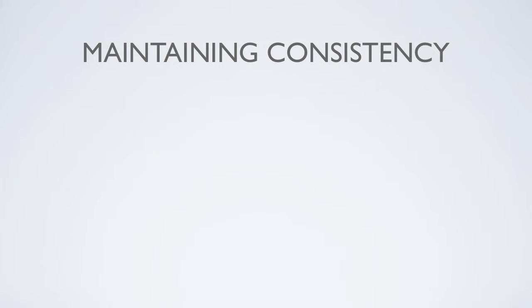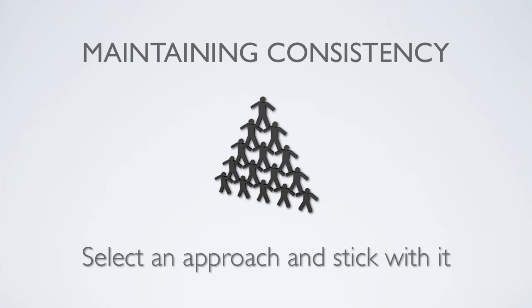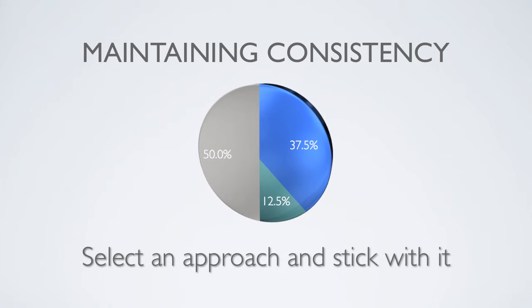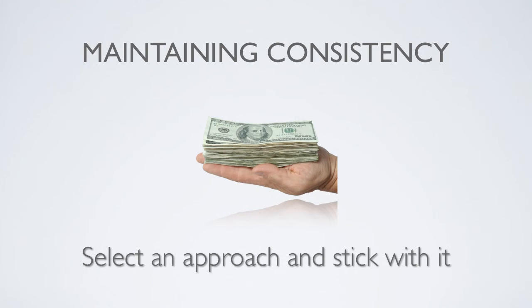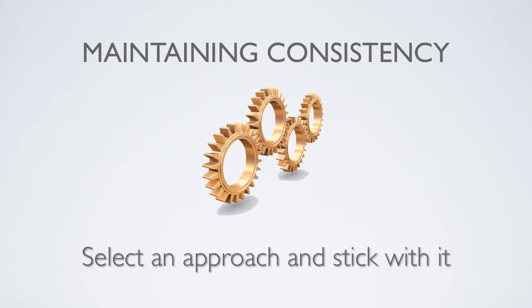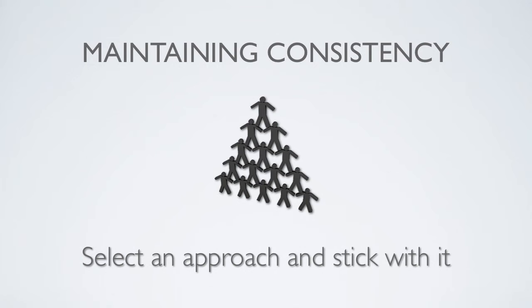Maintaining consistency. Setting organizational boundaries will only result in consistent data if all levels of the organization use the same approach. To ensure consistency, the parent company must decide on an approach — either the equity share approach, the financial control approach, or the operational control approach — and once selected and a corporate policy has been created, it must be applied to all levels of the organization.